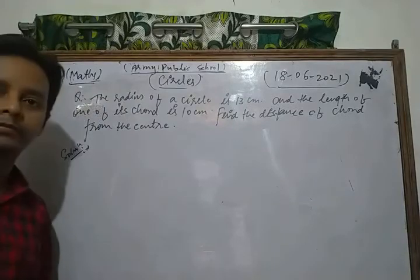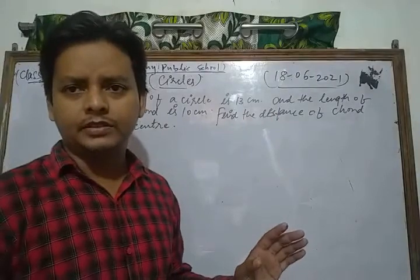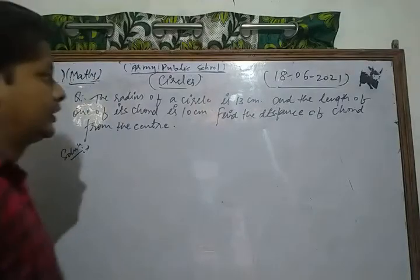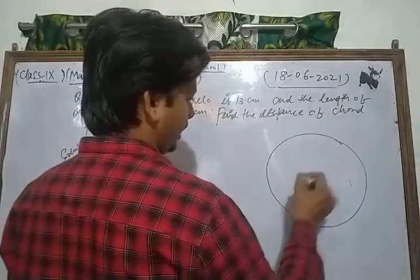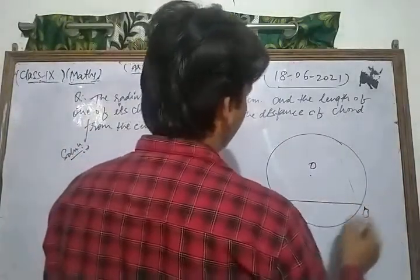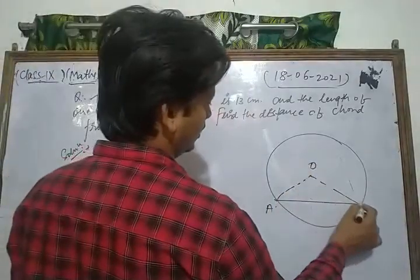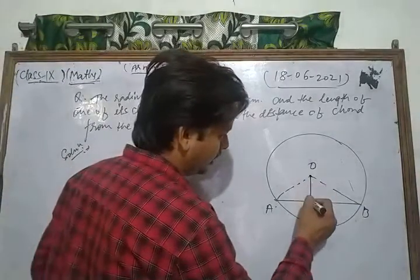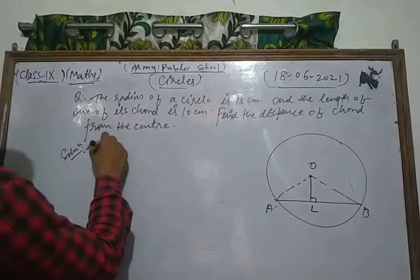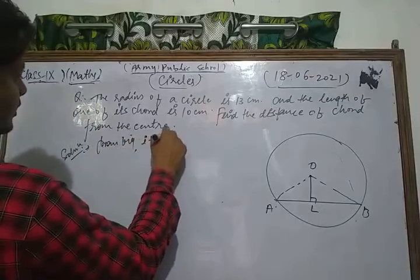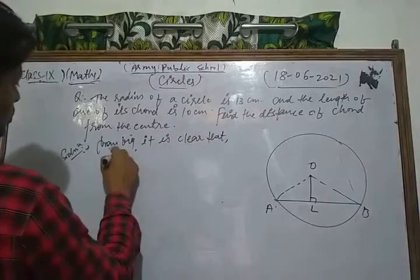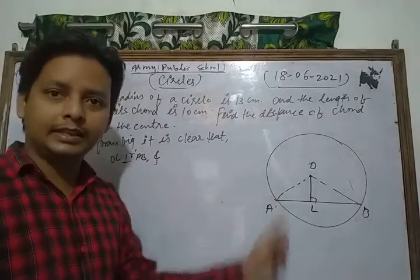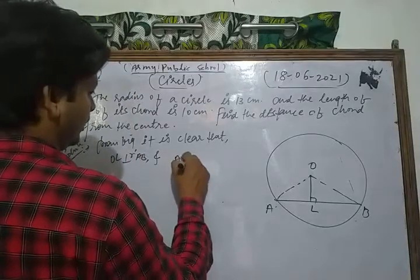Here the radius of the circle is given as 13 cm, and the length of one of its chords is 10 cm. First of all we draw a figure — a circle with center O, AB is the chord, and we join OA and OB. We find the distance of the chord from the center. We draw OL perpendicular to AB. From the figure it is clear that OL is perpendicular to AB, and that perpendicular bisects the chord, so AL is equal to BL.